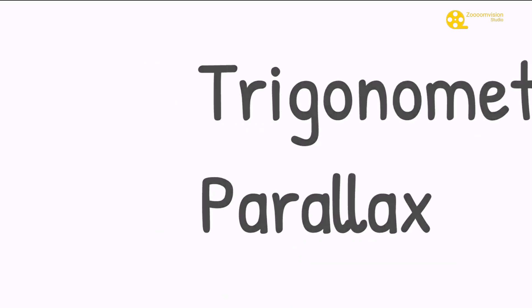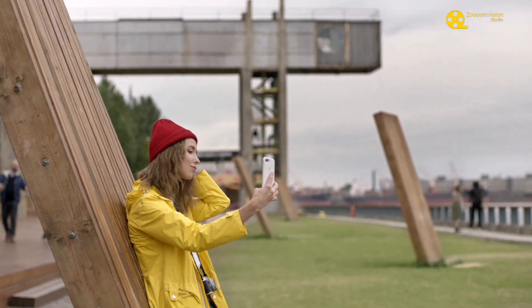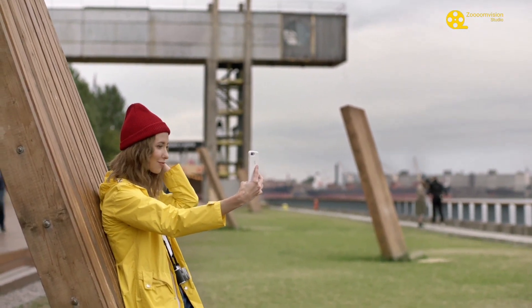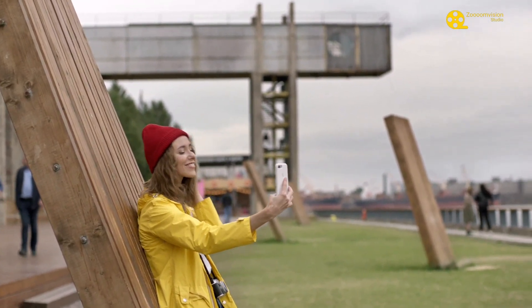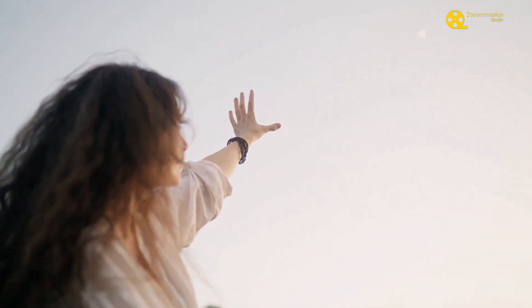For example, take your phone in your hand for taking a selfie and close your right eye and look at the phone. Then try looking at the phone by closing your left eye. It will look like the phone has changed its position, while the background objects do not change position. The same principle applies.